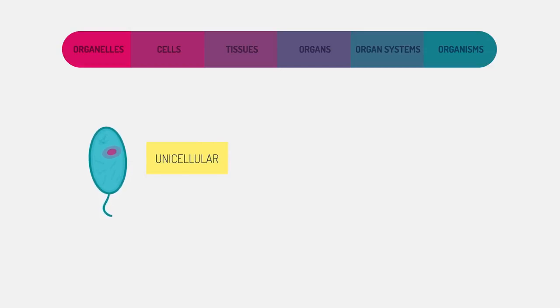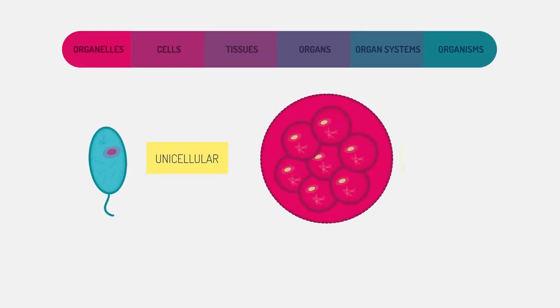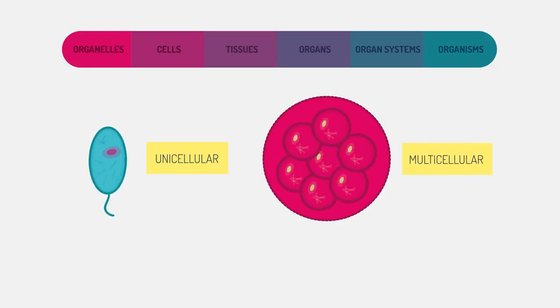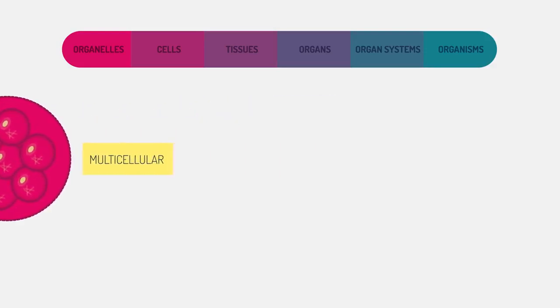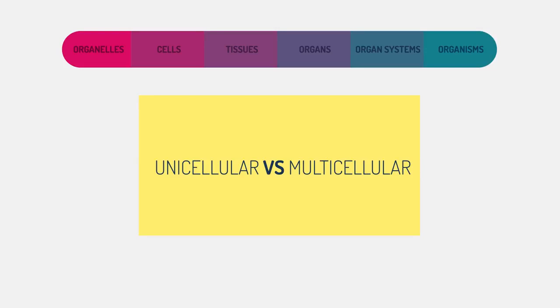In unicellular organisms, the single cell performs all life functions. However, multicellular organisms have various levels of organization within them. To learn more about the differences between unicellular and multicellular organisms, watch this video.